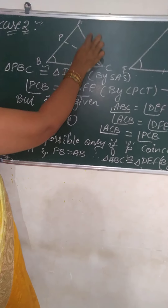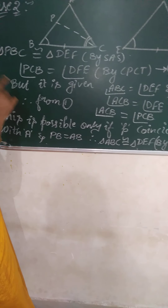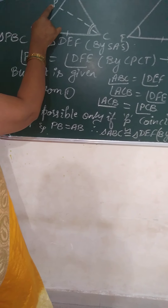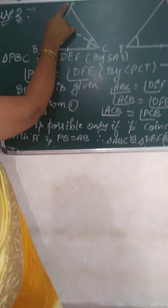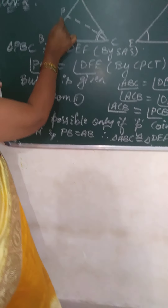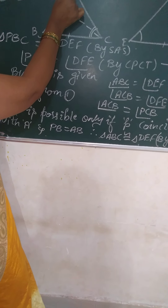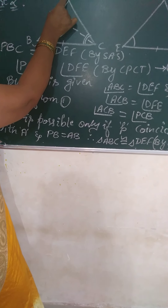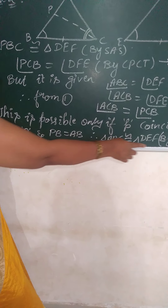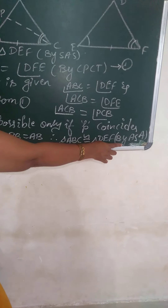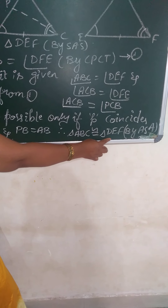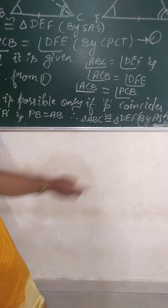Both angles ACB and PCB are the same. This happens only when P coincides with A — meaning P does not lie at a different point but coincides with A. Therefore AB is equal to DE, and by ASA congruence, triangle ABC is congruent to triangle DEF.